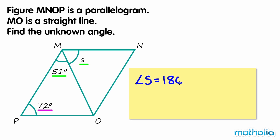So angle S equals 180 degrees minus 51 degrees minus 72 degrees, which is 57 degrees. So the unknown angle is 57 degrees.